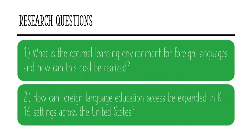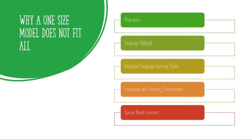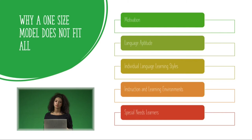A major component in being able to create programs for everybody is to understand that a one-size model does not fit all. Students have different levels of motivation and different levels of language aptitude, just like some students are really good at math and learn math in a certain way that best suits them, which means that we need to take into consideration the individual language learning styles of each and every student.